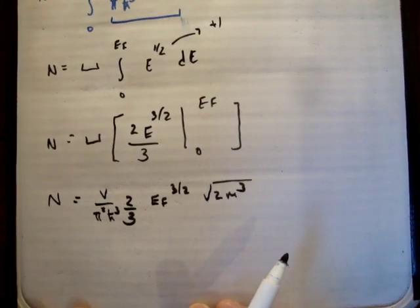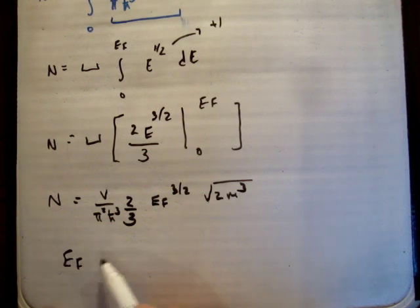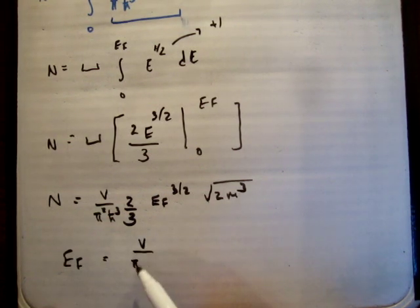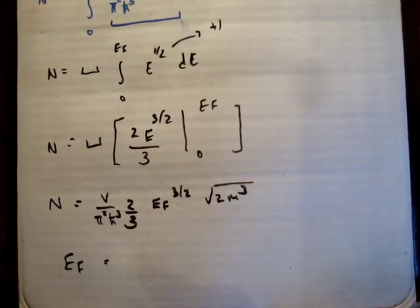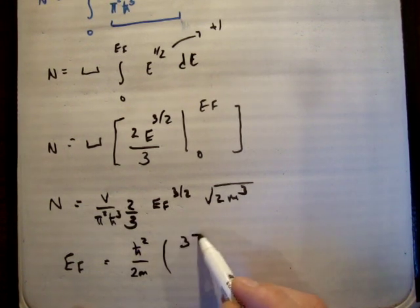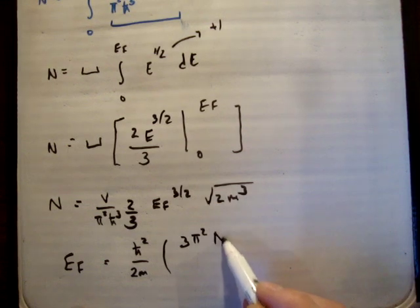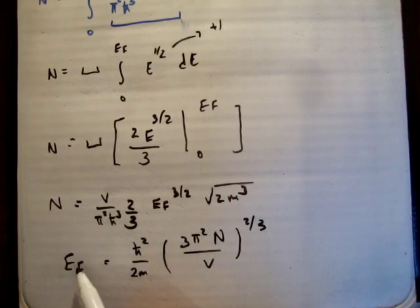You can rearrange this then to get our Fermi level, or our Fermi energy. So EF is equal to, I'll take that back, I'm looking at the wrong segment of my notes. You get the following: h bar squared over 2m, and then 3 pi squared N over the volume, all to 2 over 3. That's what we call the Fermi energy.